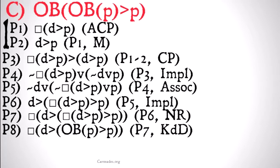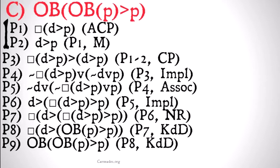So, to sum up what I just said and go through the actual steps, we're now going to take it's necessary that D implies P and simplify that down to it's obligatory that P by our KD definitions. And then we're going to take it's necessary that D implies, it's obligatory that P implies P, and use our KD definitions again to get it's obligatory that P implies P, which is our conclusion.